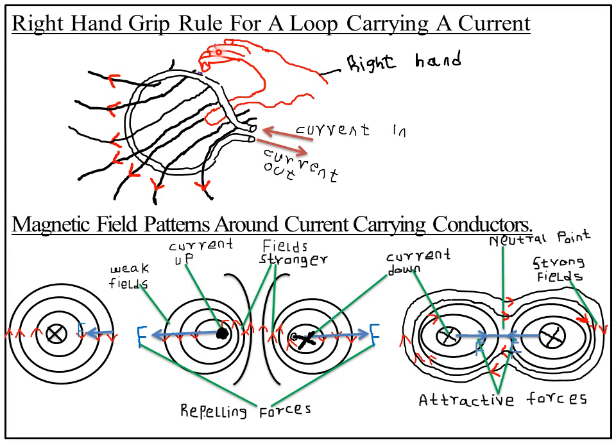When encircling this particular loop in the direction of the current, the thumb points out of the paper — in this direction. The direction the thumb points represents the direction of motion of the magnetic field lines. The right-hand grip rule for a loop states that if the fingers encircle the current loop pointing in the direction of the current, the thumb points in the direction of the magnetic field through the inside of the loop.